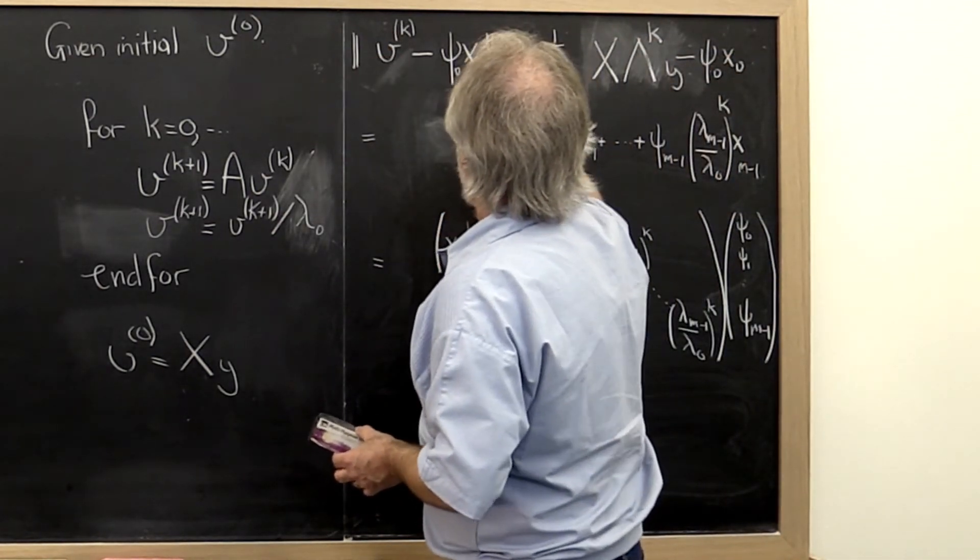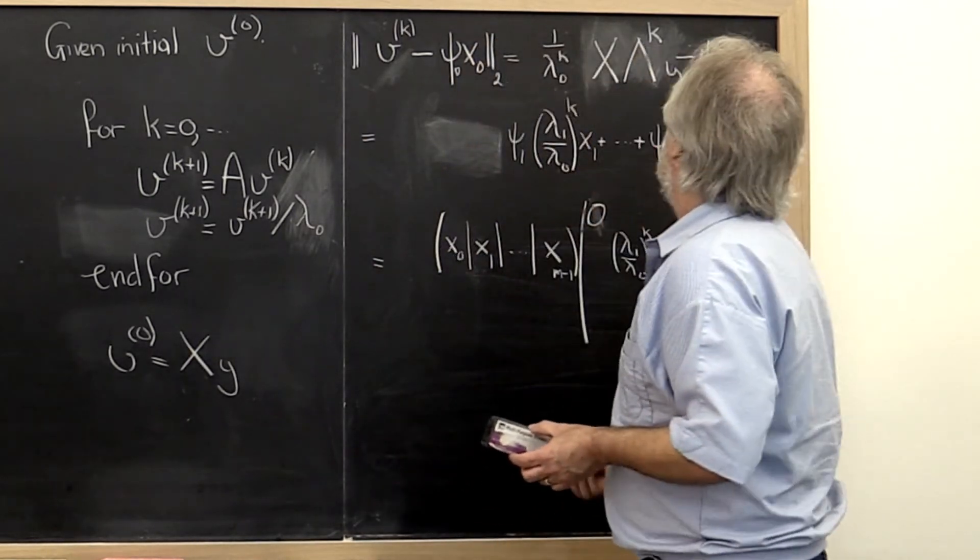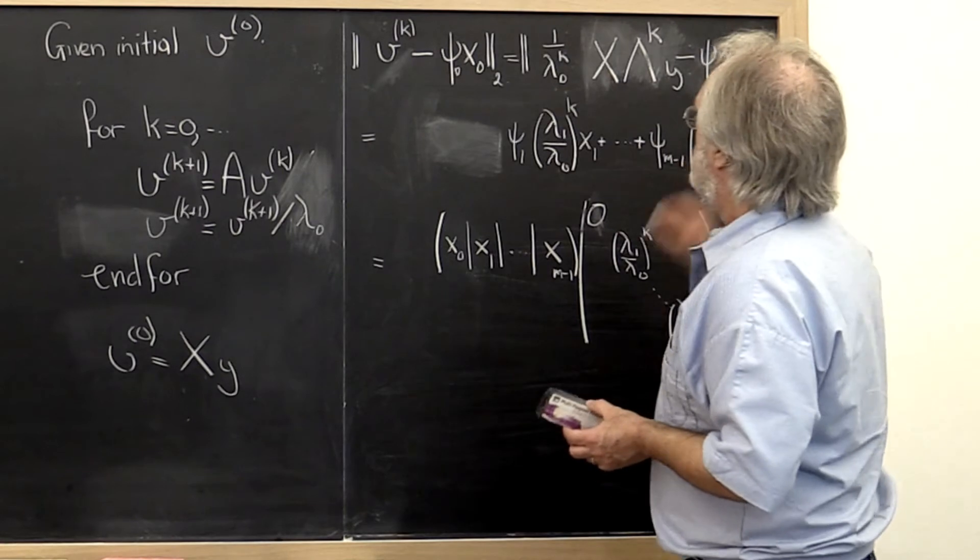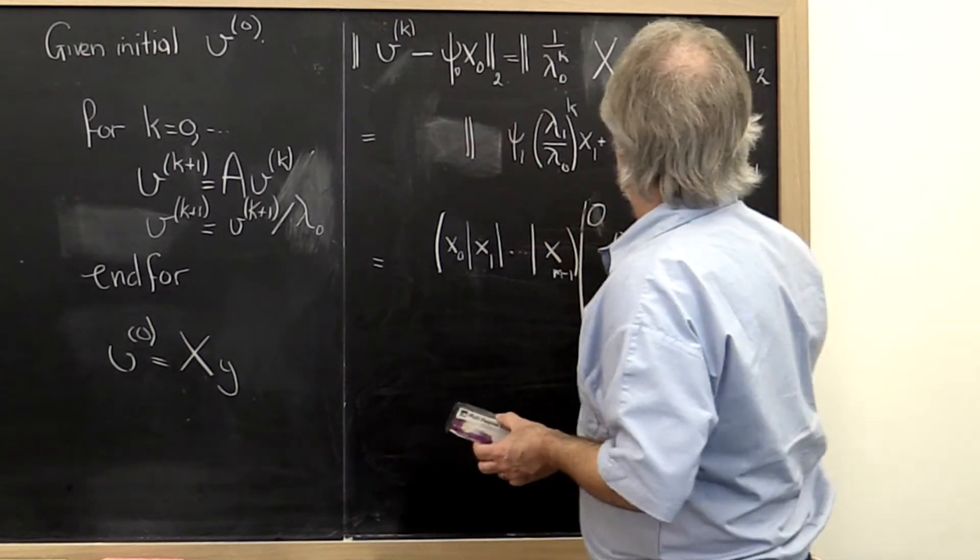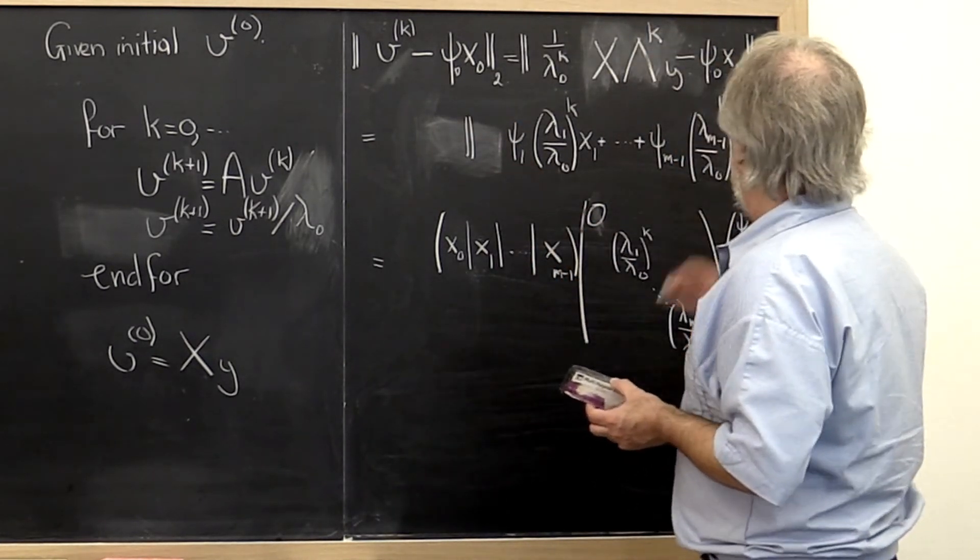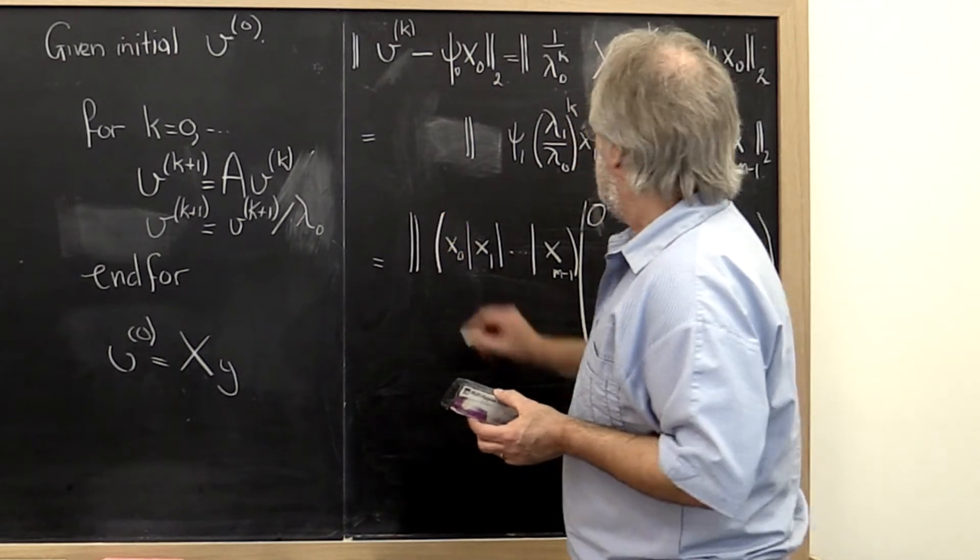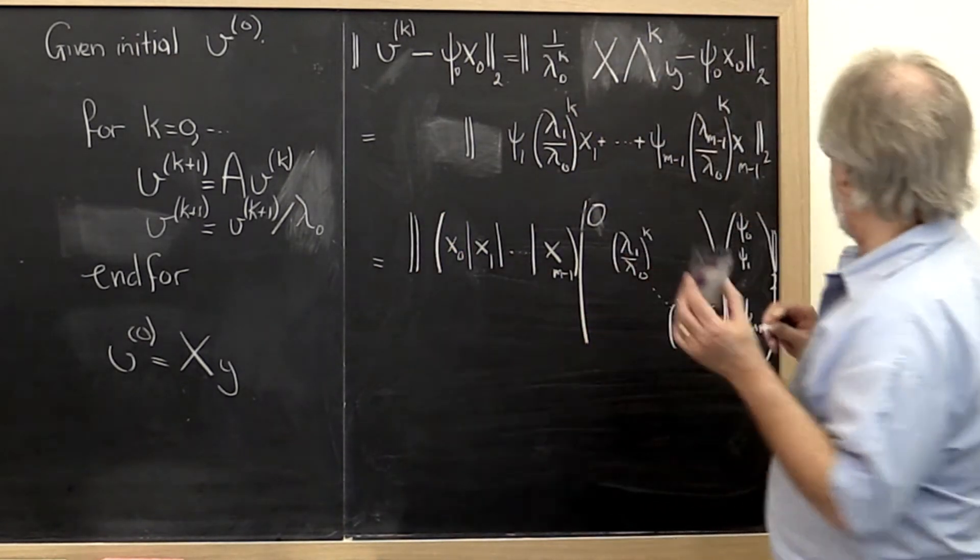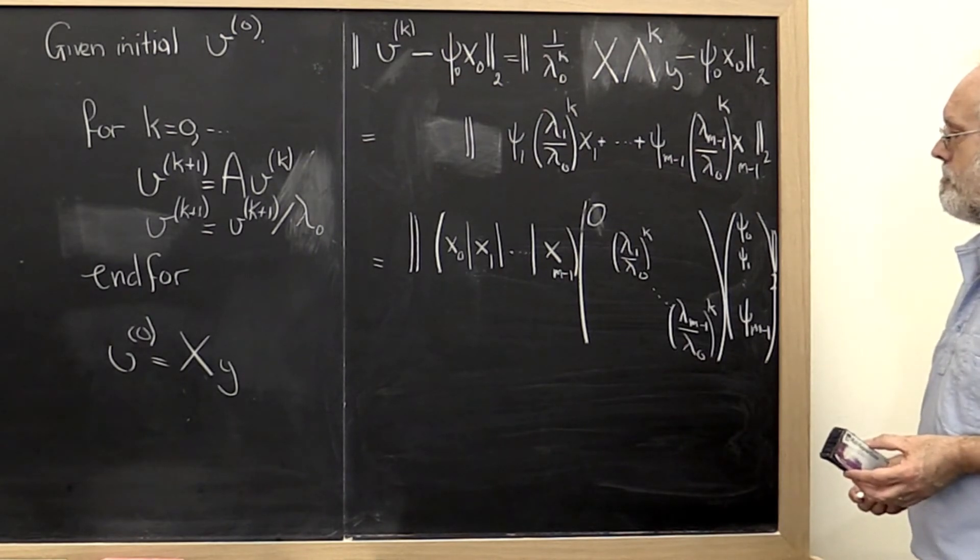If we looked at the 2-norm of this, that would have to be equal to the 2-norm of this, which would have to be equal to the 2-norm of this, and therefore equal to the 2-norm of this. And that's a little hard to write in there.